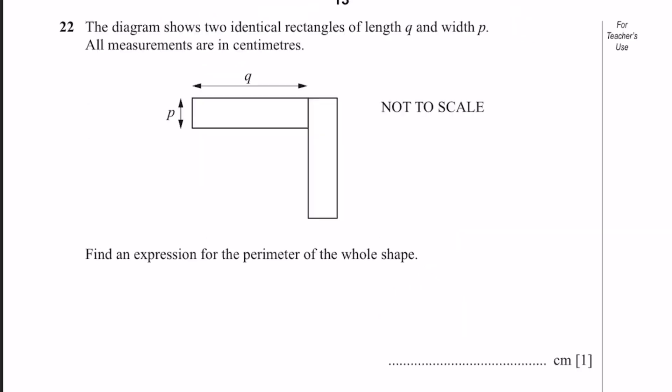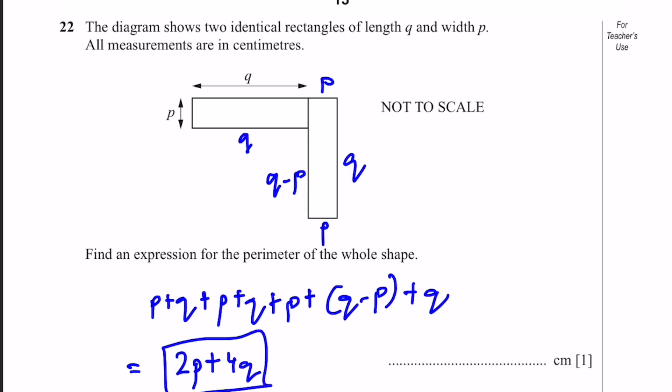Question 22. The diagram shows two identical rectangles of length q and width p. All measurements are in centimeters. Find the expression for the perimeter of the whole shape. There's a q length here as well. This length is p and this length is q, so we can write this length as q minus p. Add it all up: p plus q plus p plus q plus p plus q minus p plus q. When we add it up, it becomes 2p plus 4q. That's the answer in centimeters.